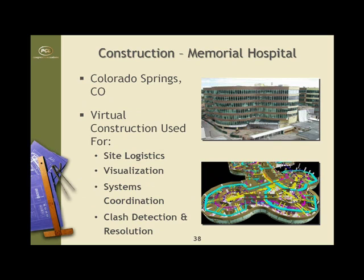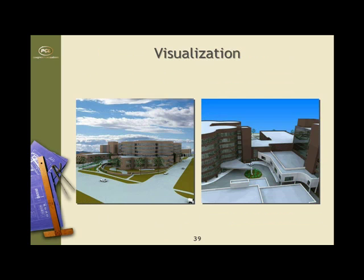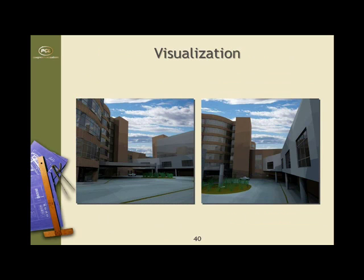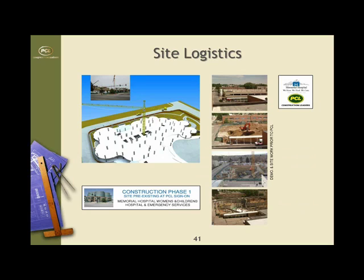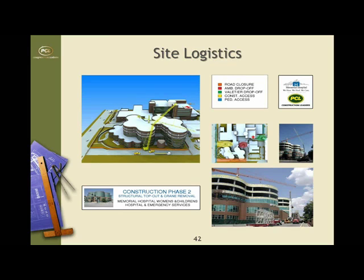Our next example is during the construction phase. This is Memorial Hospital in Colorado Springs, Colorado — actually our first project that we really used virtual construction for. We have some quick renderings that we used to work with the client and the designers. Site logistics were very important on this project because when we showed up to site we took it over from another GC, and it's also an expansion to an existing campus. We put together site logistics boards to show the project team how all of this process is going to work.